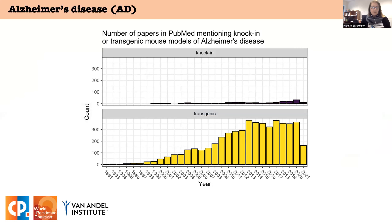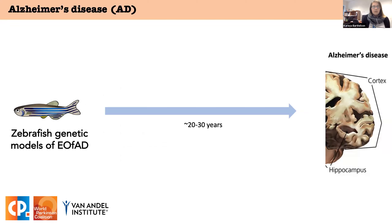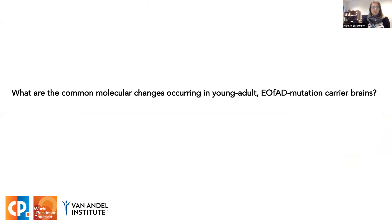There are mouse knock-in models of AD mutations which have engineered mutations in the endogenous gene to replicate the human disease state. However, they're very rarely used in the field, as shown by the number of PubMed papers per year citing knock-in versus transgenic mouse models. We think knock-in mice will more accurately model the direct effects of the mutations. Our research group and my PhD thesis aims to address this gap by generating and analyzing knock-in zebrafish genetic models of EOFAD, as closely as possible recreating the genetic state of human EOFAD. The overall question we're trying to address is: what are the common molecular changes occurring in young adult EOFAD mutation carrier brains?